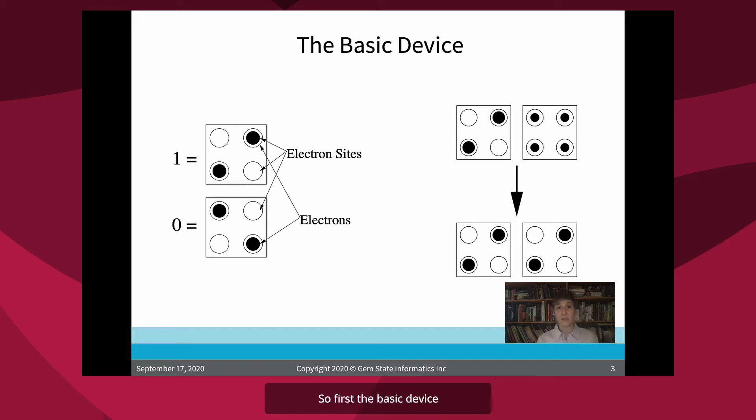So first, the basic device, the primary difference, many differences, but the biggest thing is QCA represents data as charge configuration rather than charge flow. So the basic device has four quantum dots arranged in a square and two excess electrons that tend to repel each other. So you end up with two stable configurations.